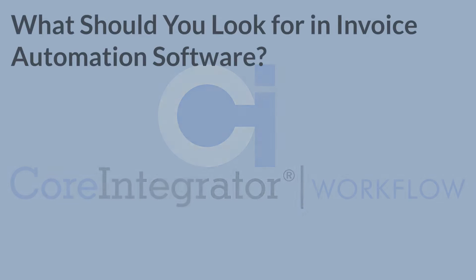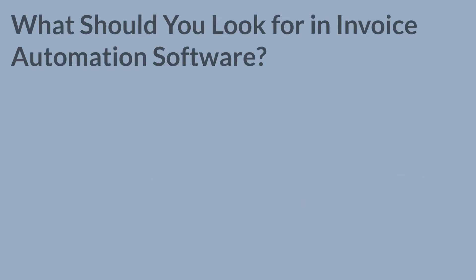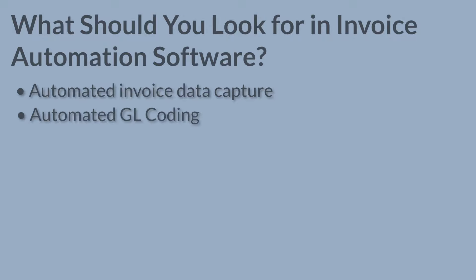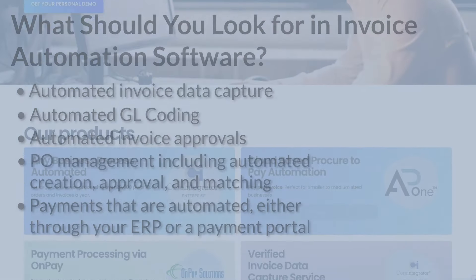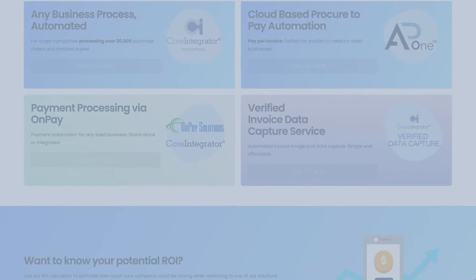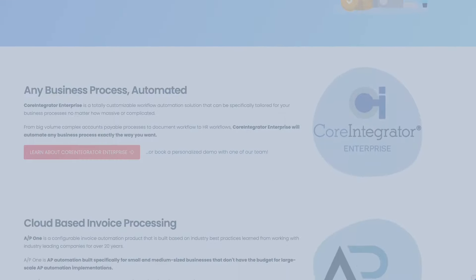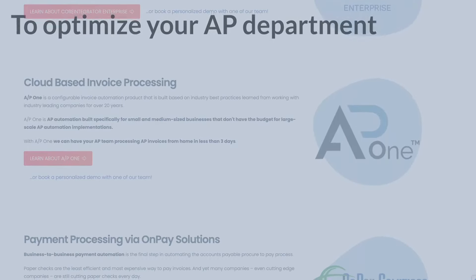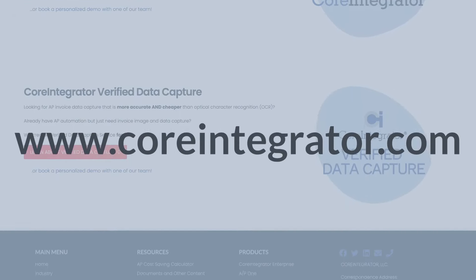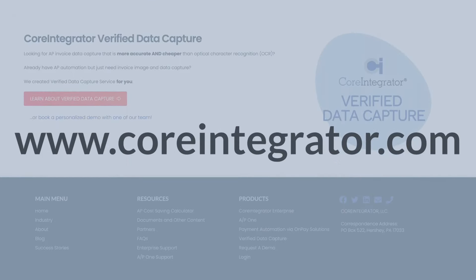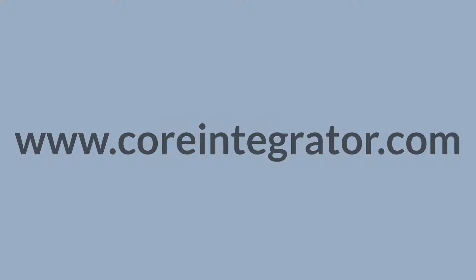One last review of what you should look for when you automate your invoice process: automated data capture, GL coding, invoice approvals, PO management, and payments. Creating a touchless invoice process doesn't have to be hard or expensive. It just takes the right software and the right partner. So if you're interested in optimizing your AP department, drop by our website coreintegrator.com for more information and to book a free, no-obligation demo.